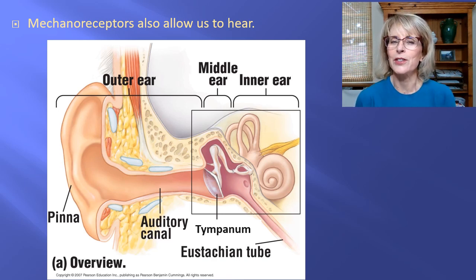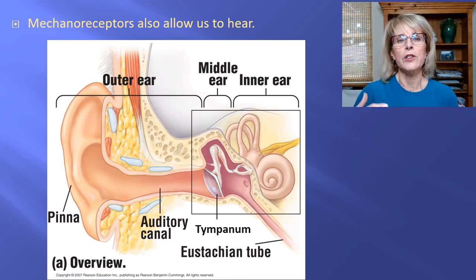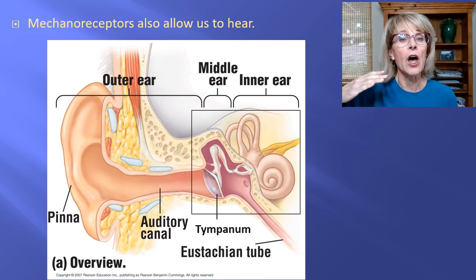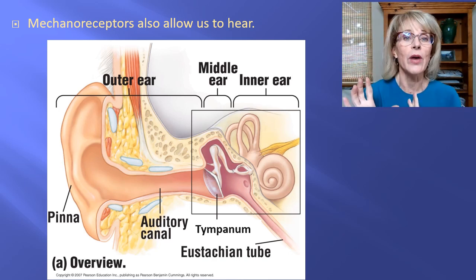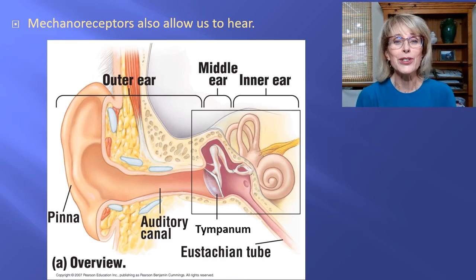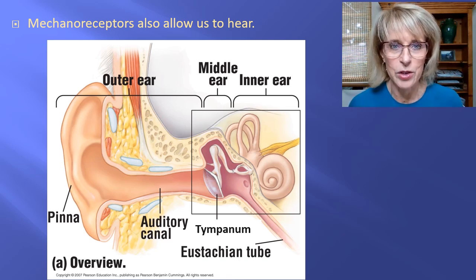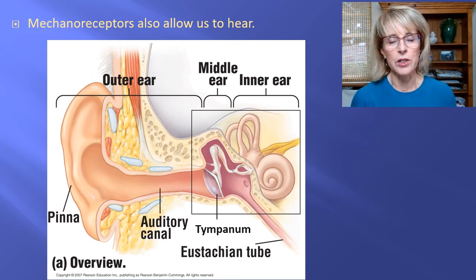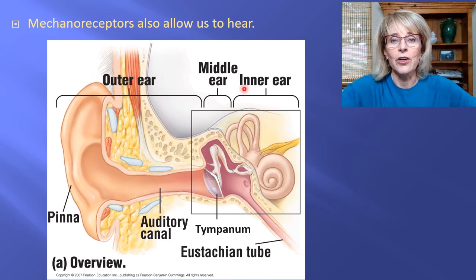Mechanoreceptors also give us our sense of hearing and our sense of balance. Your sense of balance includes knowing up and down, whether your body is spinning, or whether you're accelerating in space — those are all jobs that your ear does. All of the mechanoreceptor cells that allow us to experience hearing and balance are found here in the inner ear.